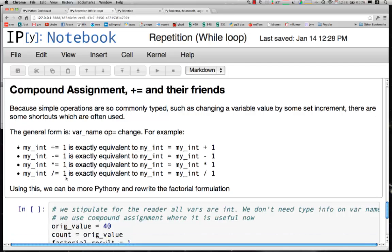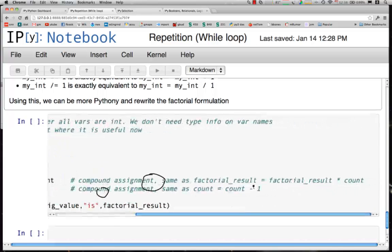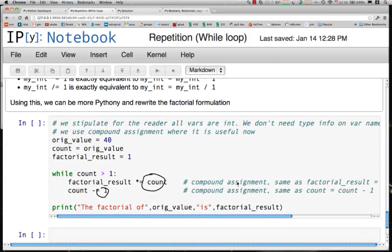If we rewrite the factorial of values here, you can see that we want factorial result to go up by multiplication by count and I want count to go down by 1. These are exactly equivalent to these expressions, they are just shortcuts.